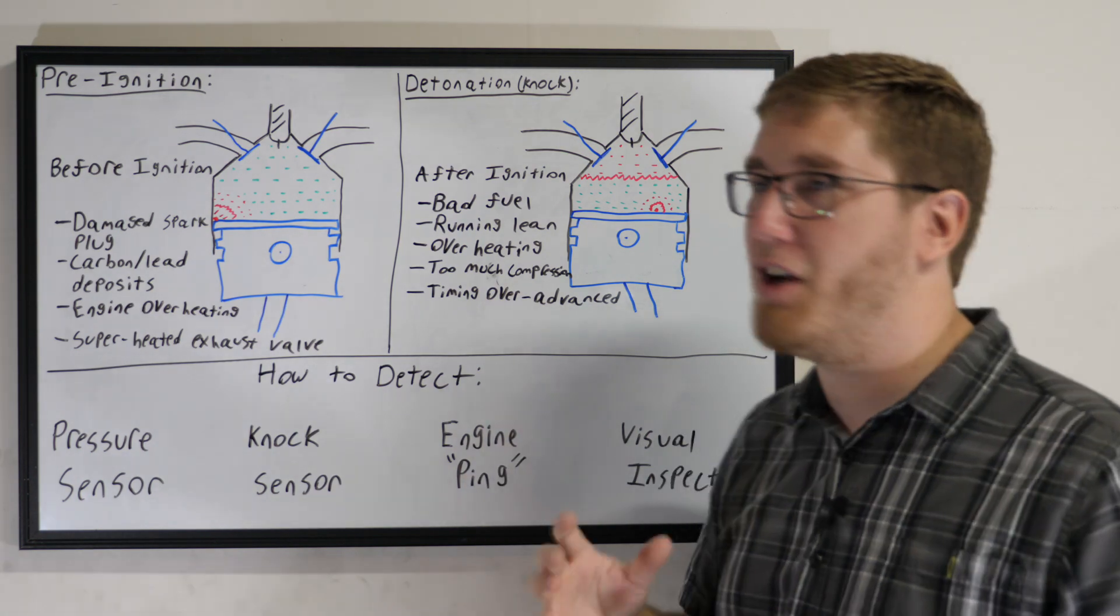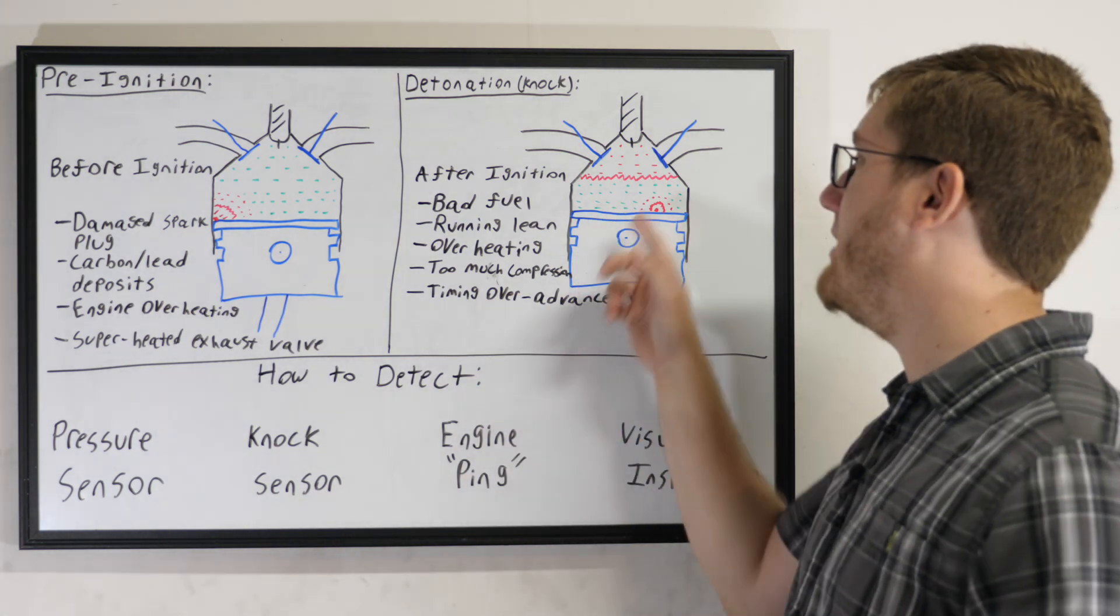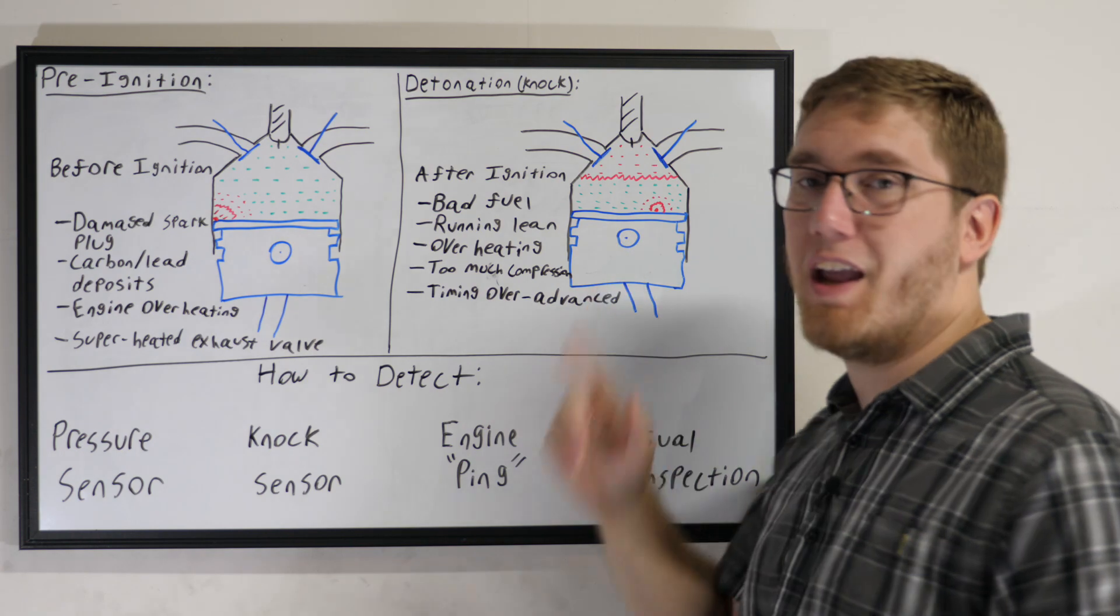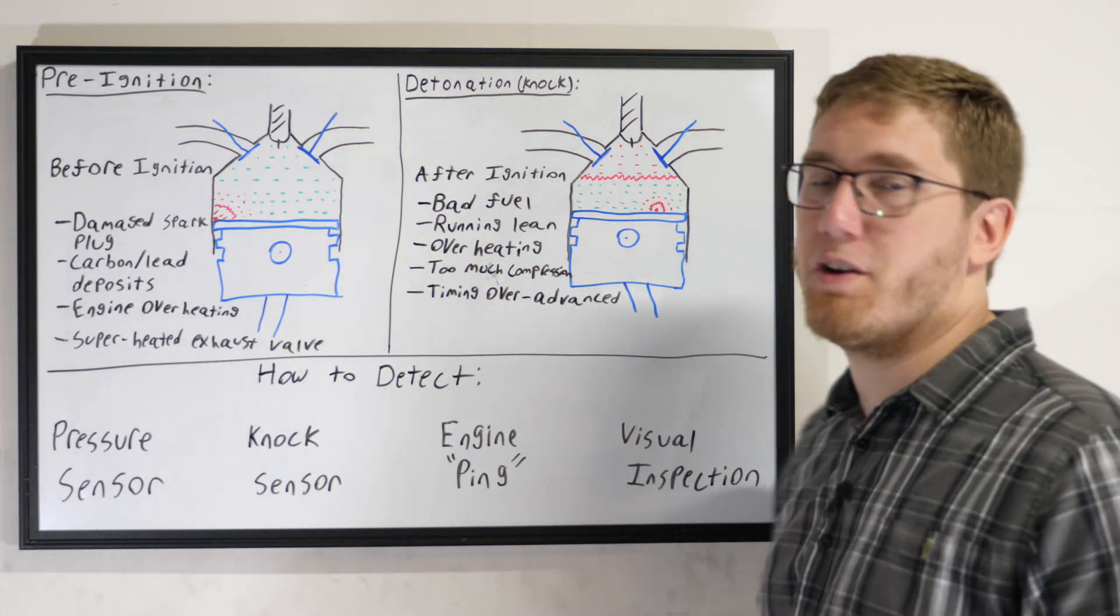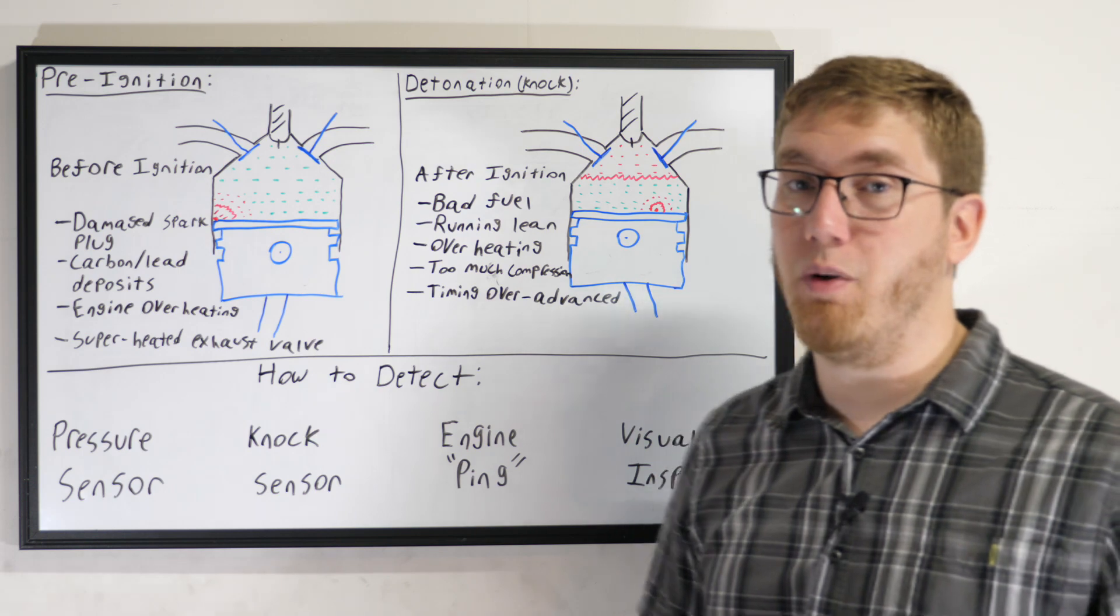So running lean is another cause. Overheating, once again, for similar reasons. If your engine's running too hot, as you're beginning to go through the ignition phase, you can get detonation due to some of that air fuel mixture hitting its auto ignition point prematurely.